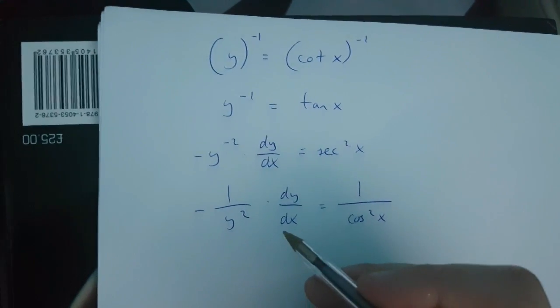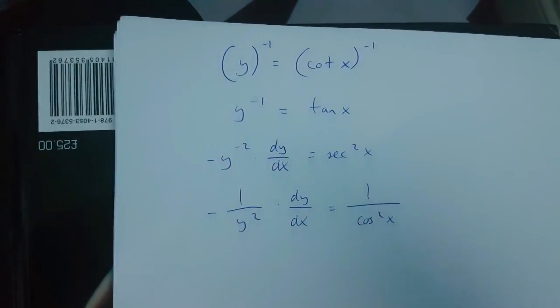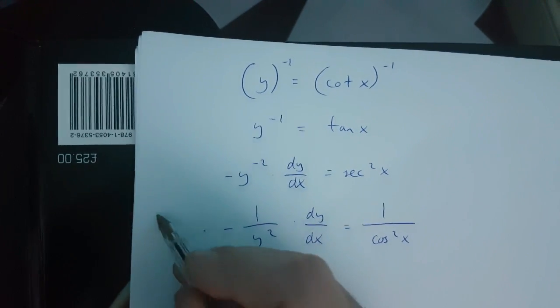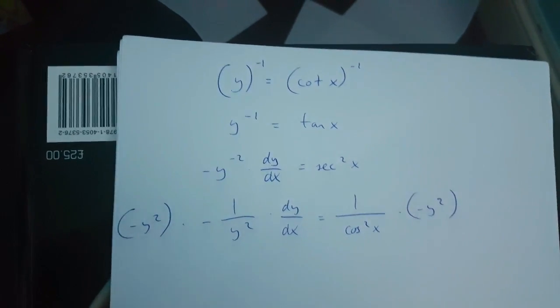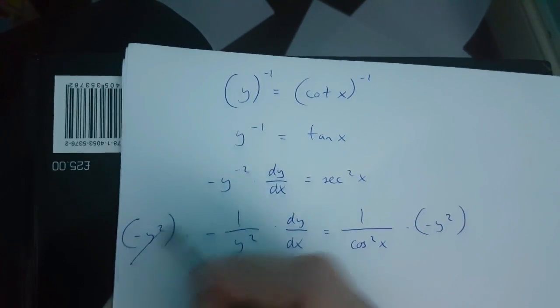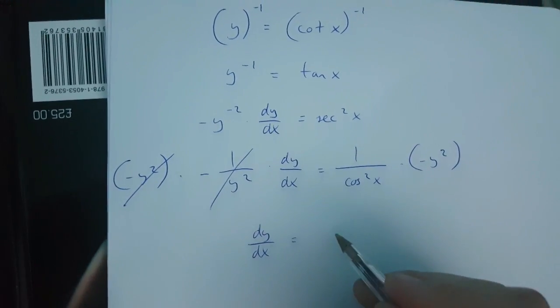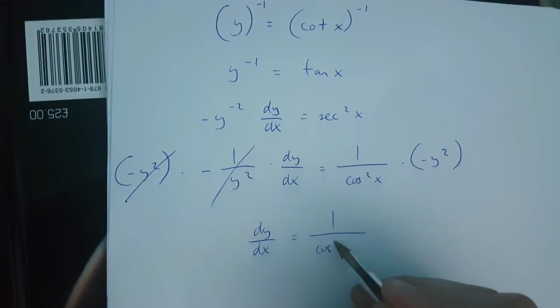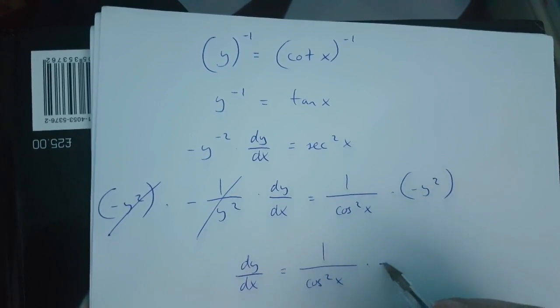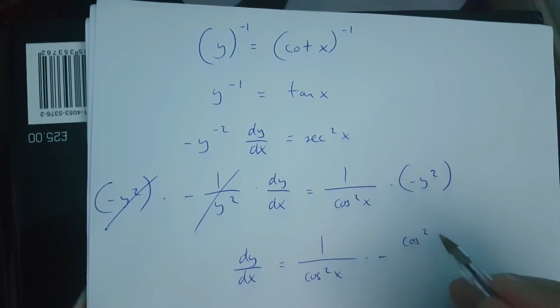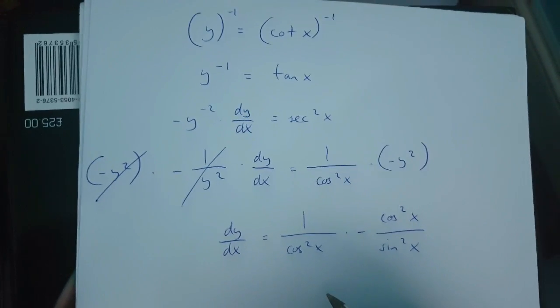Now to isolate dy over dx what I have to do is multiply both sides of this equation by minus y squared. dy over dx is equal to 1 over cos x squared times minus y squared which is minus cos x squared over sin x squared.